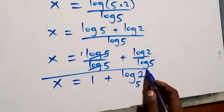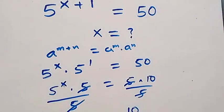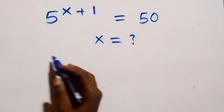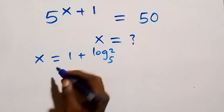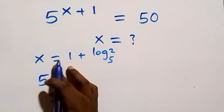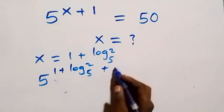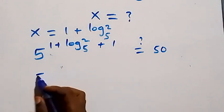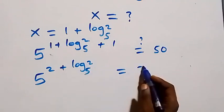Log 5 over log 5 is 1, giving x equals 1 plus log 2 to base 5 — the same result as Method 1. We can now verify this by substituting x equals 1 plus log 2 to base 5 back into the original equation. We get 5 raised to power 1 plus log 2 base 5 plus 1 equals 50, which is 5 raised to power 2 plus log 2 base 5 equals 50.